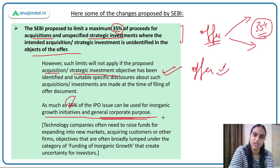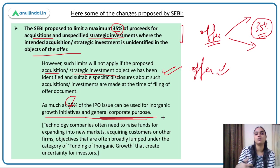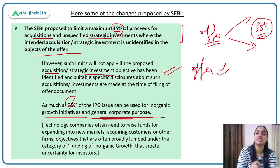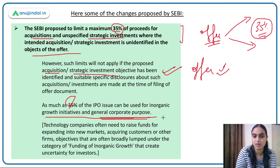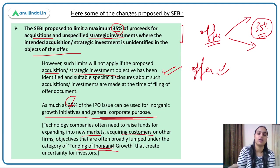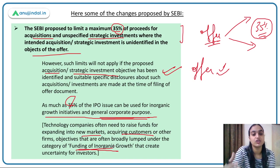Inorganic growth means going for some kind of acquisition — acquiring a firm, merging with a firm, or entering into a venture. The basic objective is to expand your market, acquire existing customers, or acquire existing markets. Technology companies often raise funds for expanding into new markets and acquiring customers — these are some objectives of funding through inorganic growth.